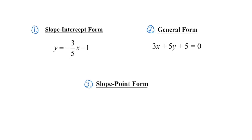The third form is slope-point form, and as you might imagine from the name, we can use this form if we have a slope and any point on the line. It's similar to slope-intercept form in that way, but with slope-intercept form the point has to be the y-intercept. With slope-point form, we can use any point on that line to get the equation.